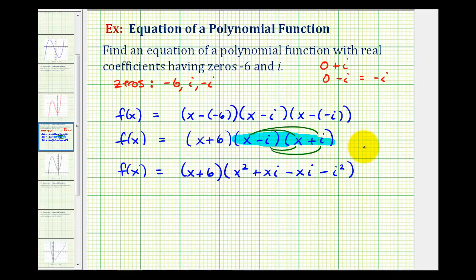Remember i squared is equal to negative one. So let's go ahead and simplify this again. f(x) equals the quantity x plus six times x squared. xi minus xi, that would be zero. Then we'll have minus i squared but this is the same as minus negative one which becomes plus one.